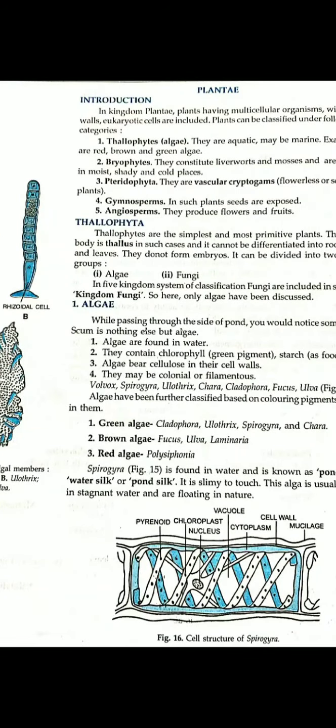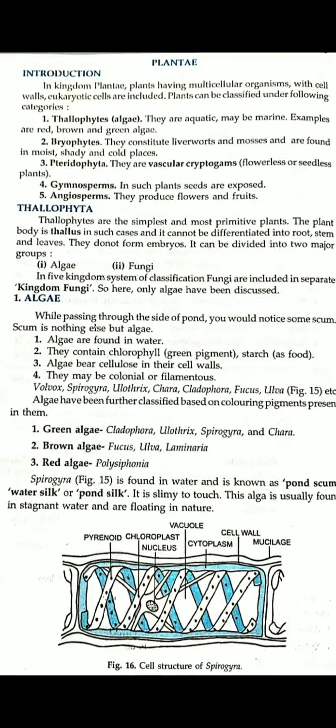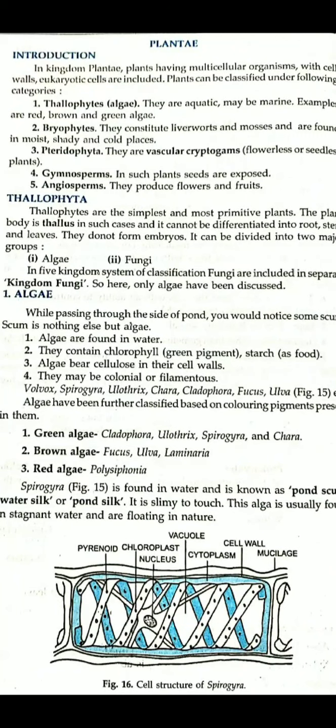Today's topic is the different categories of plants. First, we will see Thallophyta. As for Kingdom Plants, these are the characters. Plants are multicellular organisms. They possess cell walls and eukaryotic cells. Plants divide into different categories — it is 5 categories.